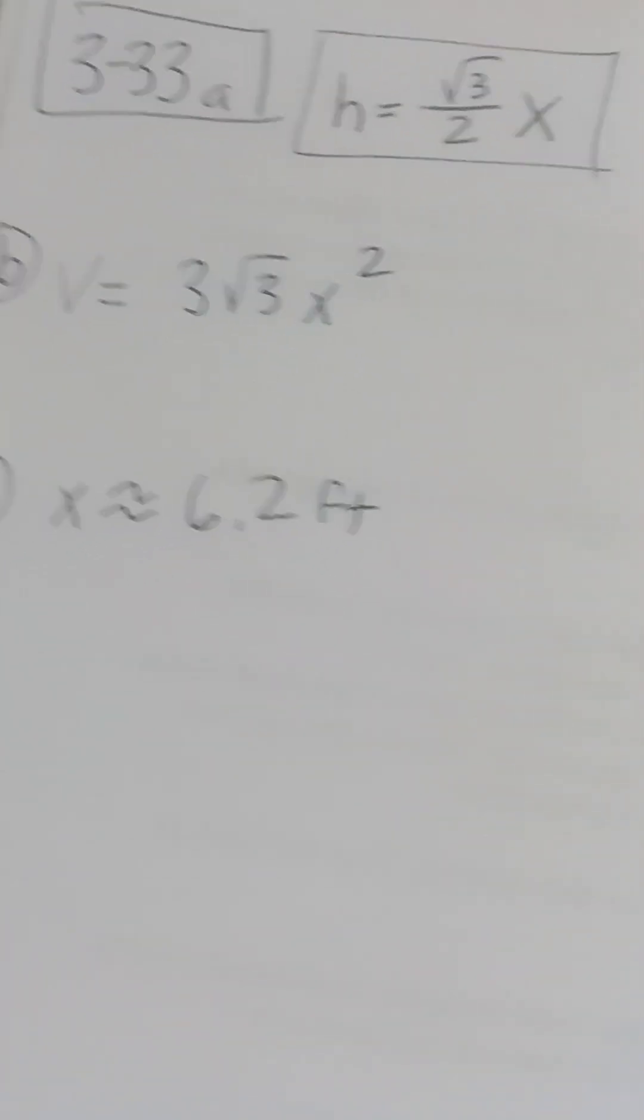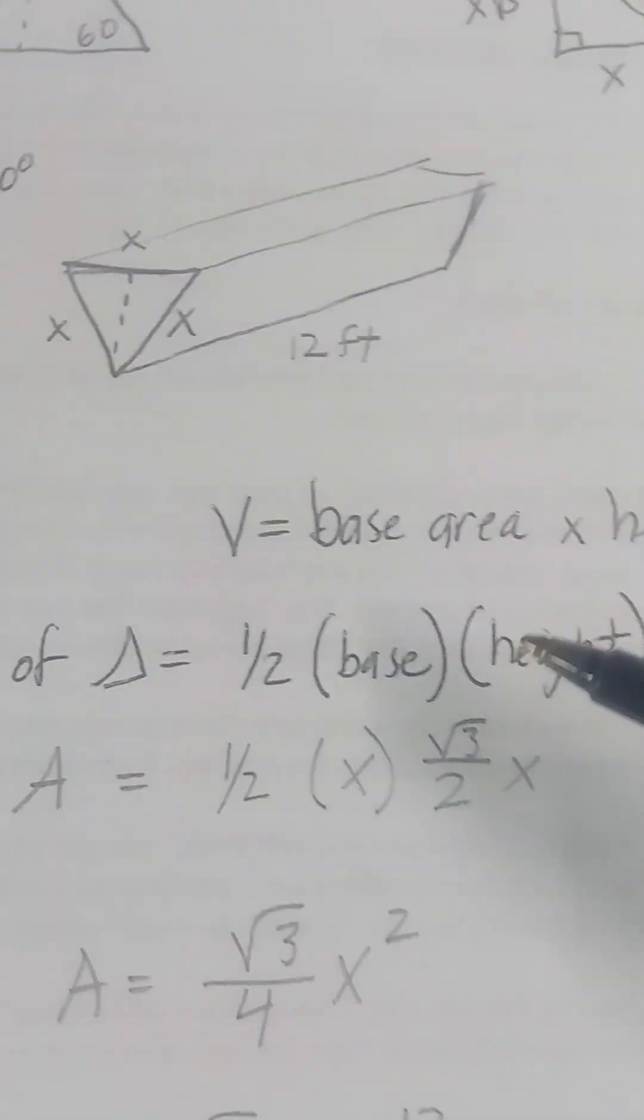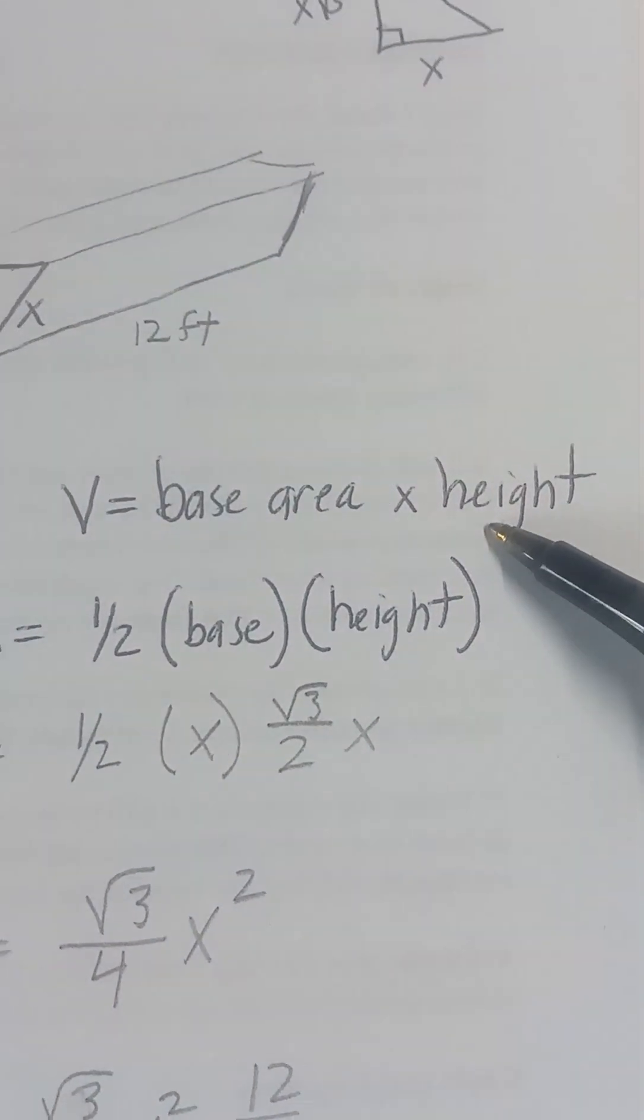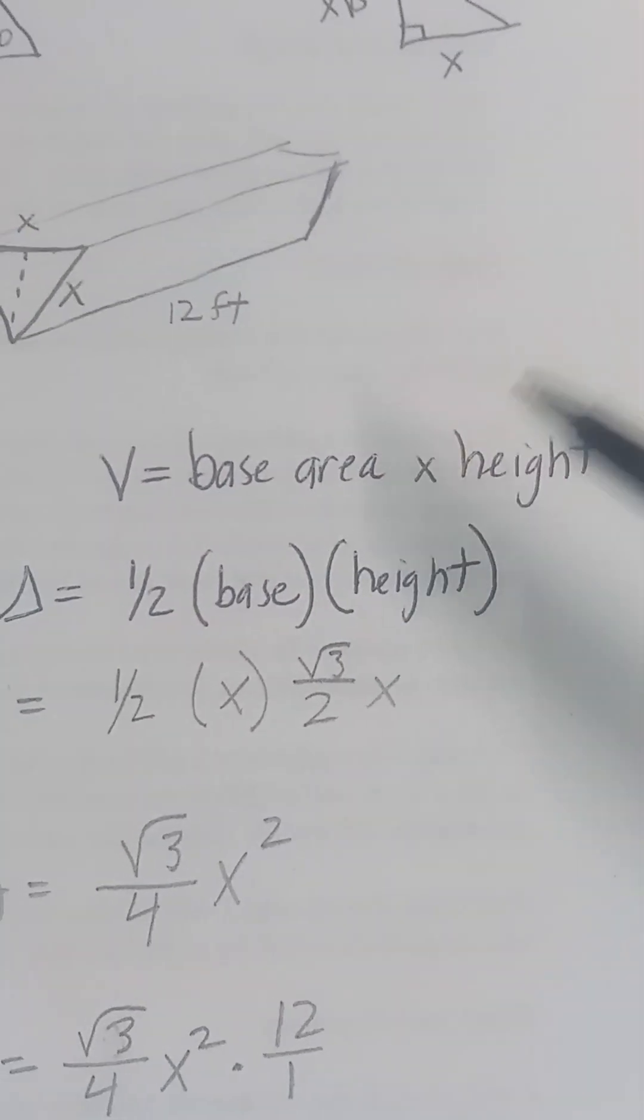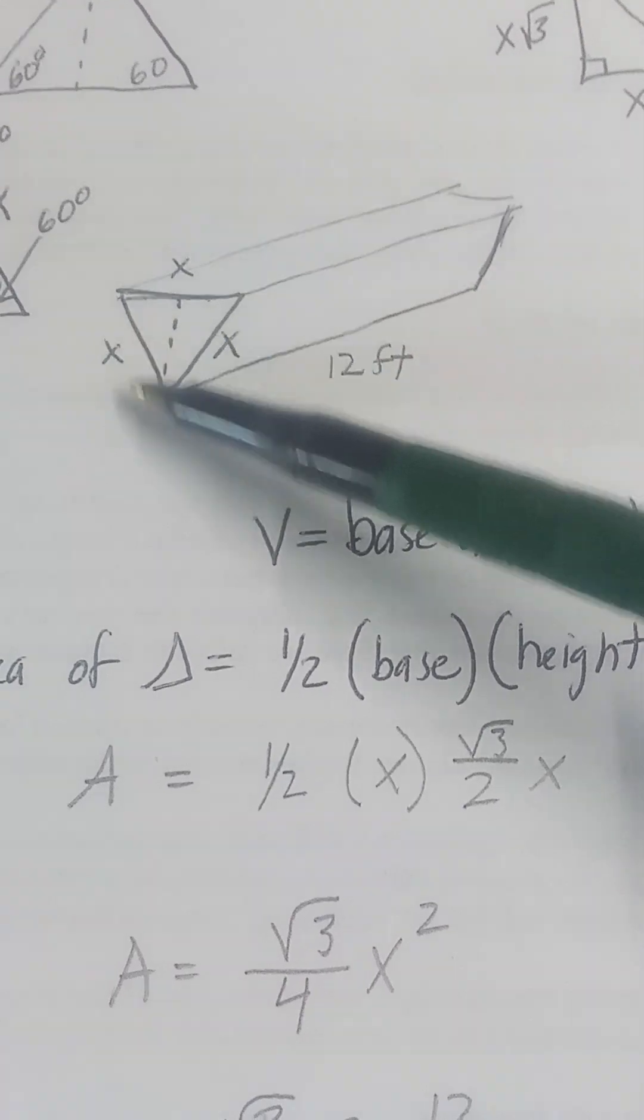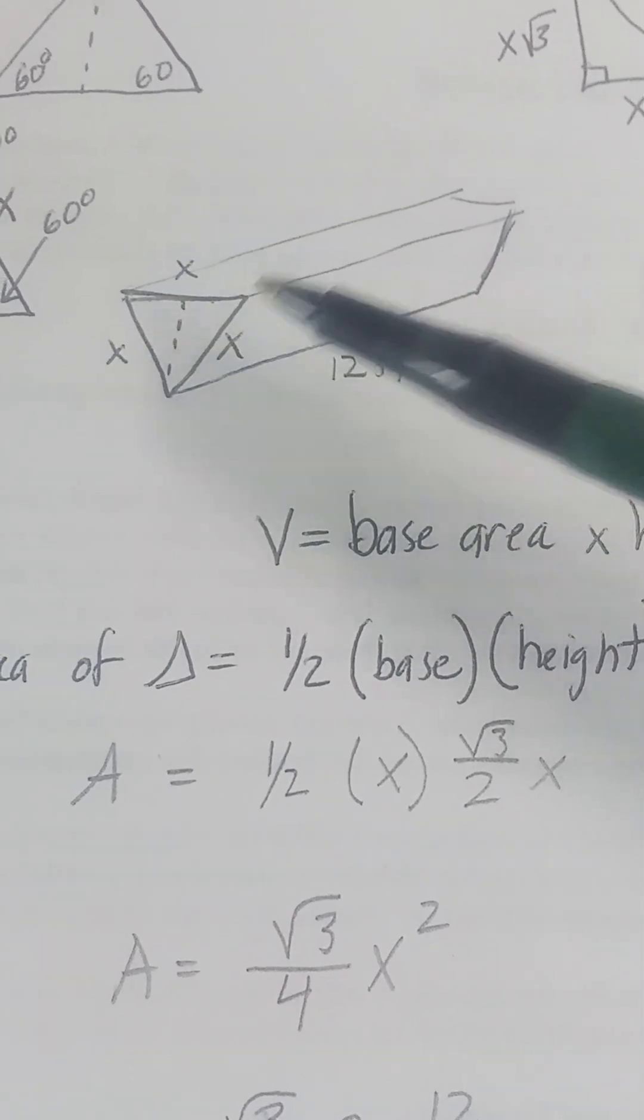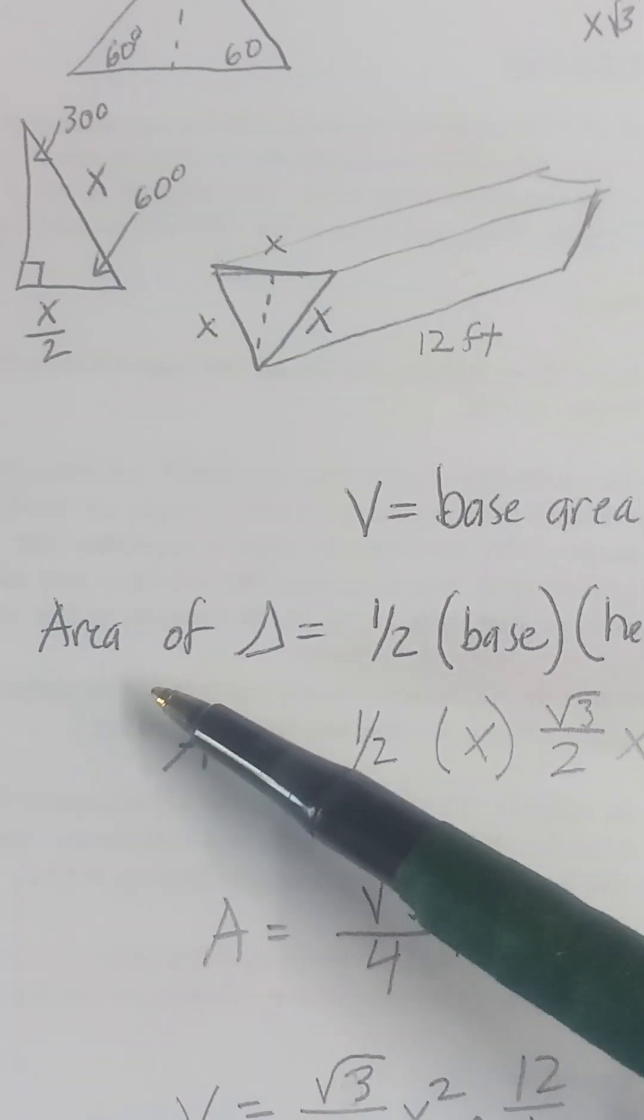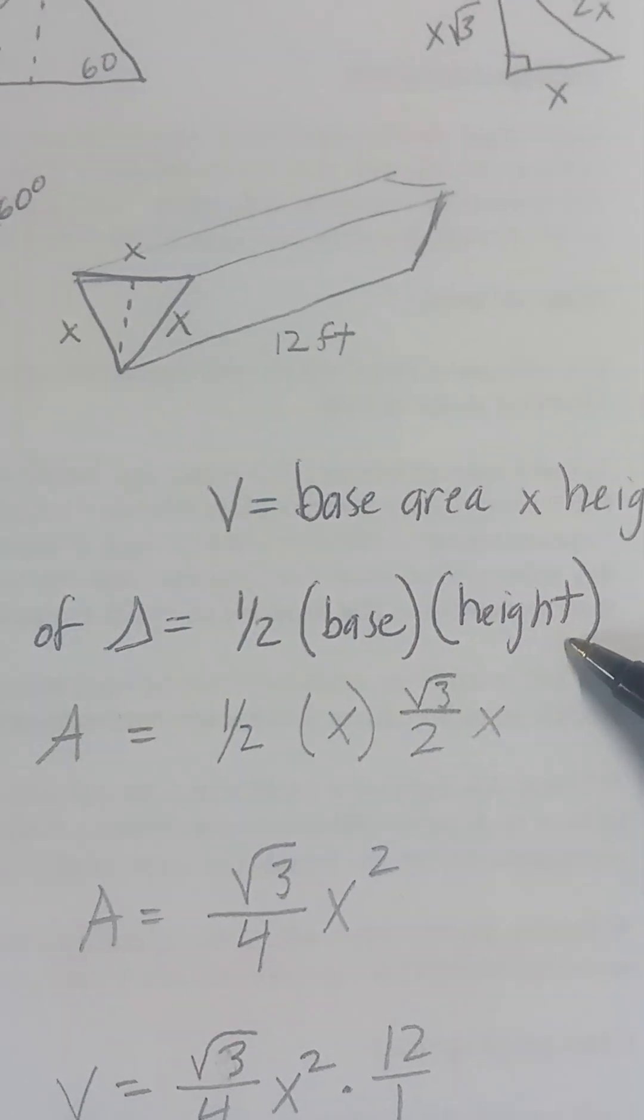Letter B asks for the volume of the trough. Volume is base area times height. You can look that up if you don't have it memorized. Our base is a triangle, so I'm going to get the area of the triangle.